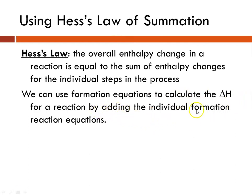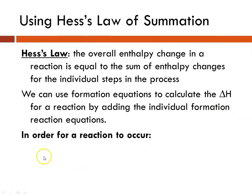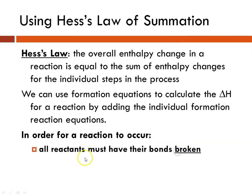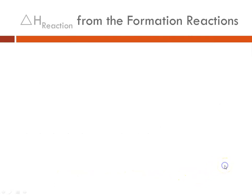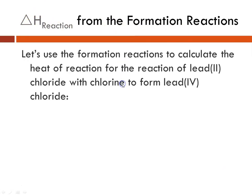We can use individual formation equations for each of the substances in the overall reaction sequence to calculate the delta H's for the reaction, and we do that by adding the individual formation reaction equations. In order for a reaction to occur, remember that all of the reactants must have their bonds broken, and all of the products have to have new bonds formed.